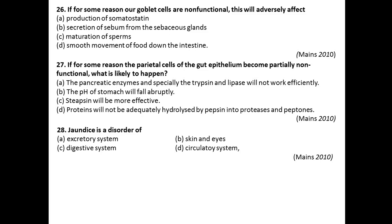Question twenty-eight: Jaundice is a disorder of — excretory system, skin and eyes, digestive system, or circulatory system? It is absolutely a disorder of the digestive system. So option C is the right answer.